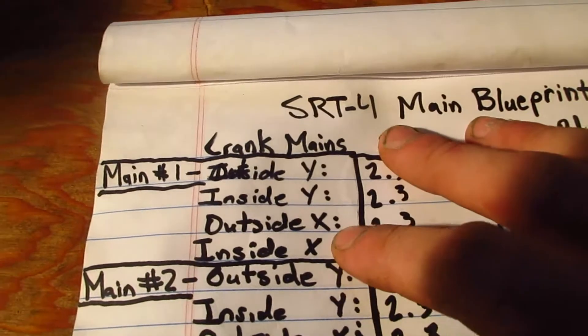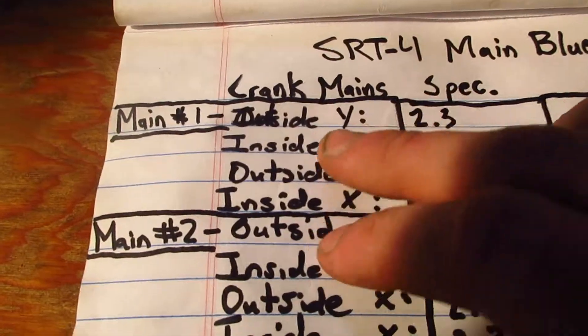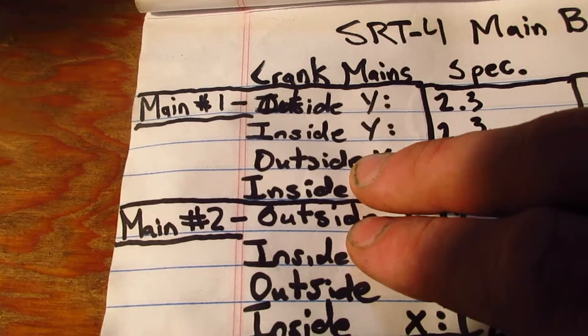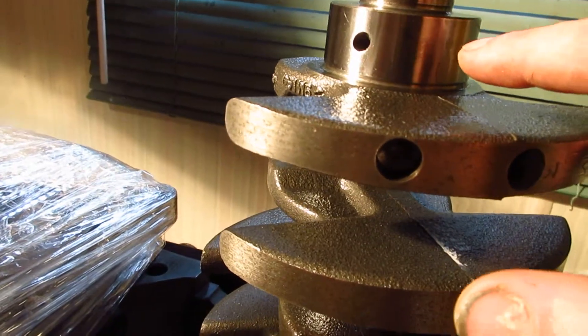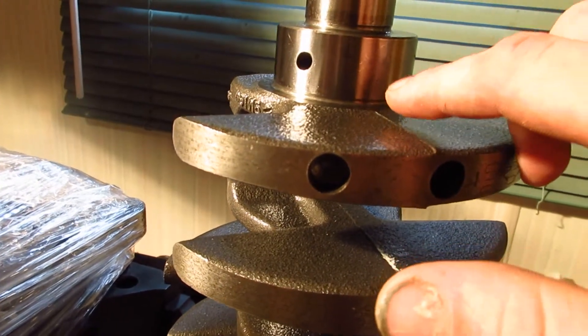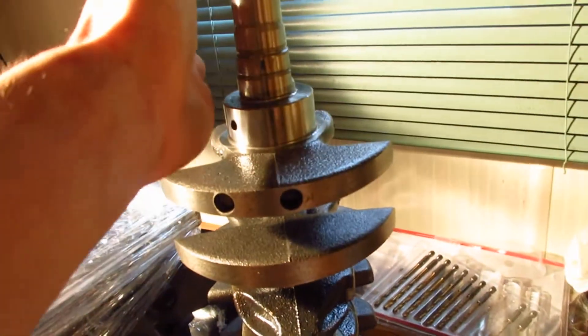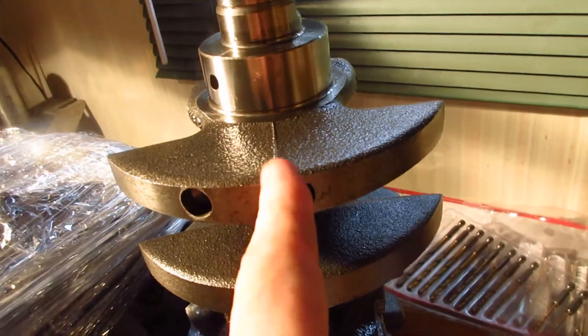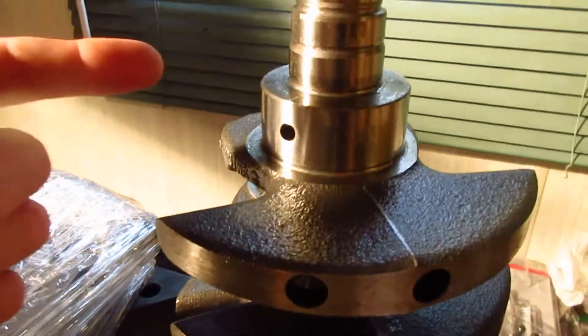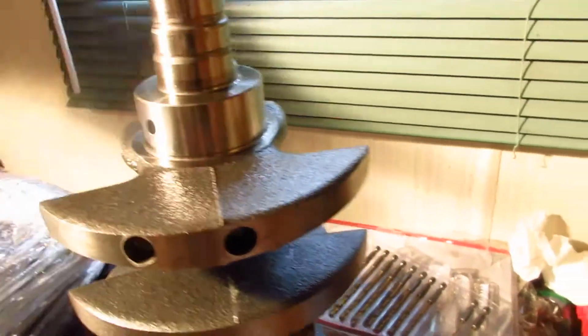I'm going to be measuring the crank on two axes. You're going to have an outside, which is the side of the bearing that's closest to the front of the engine, and you're going to have an inside, which is going to be the innermost portion. The Y-axis is going to be running straight up and down with the rods, and then X is going to measure that way.